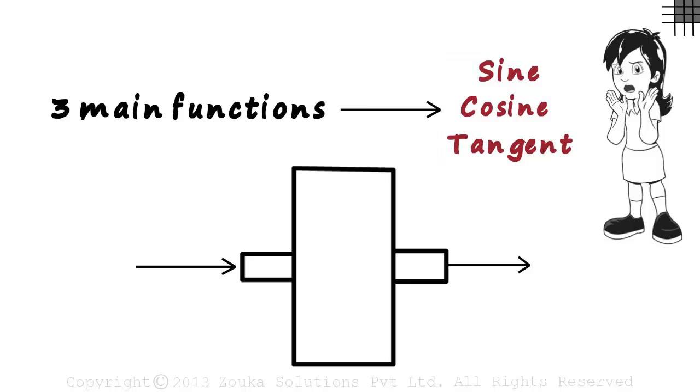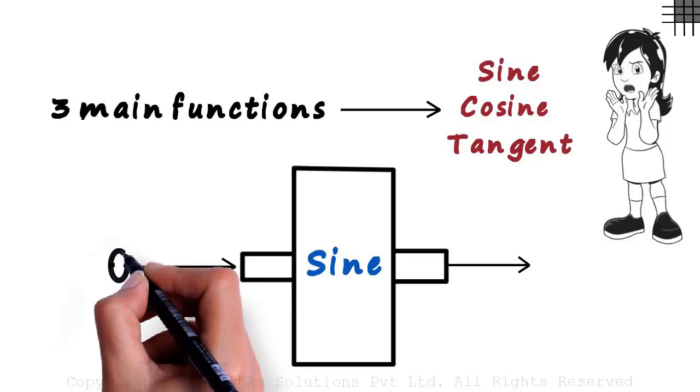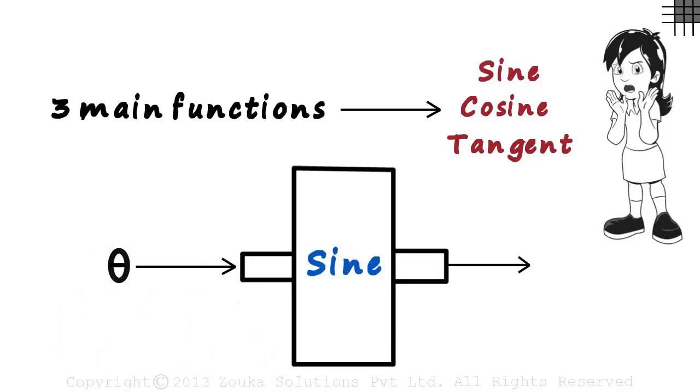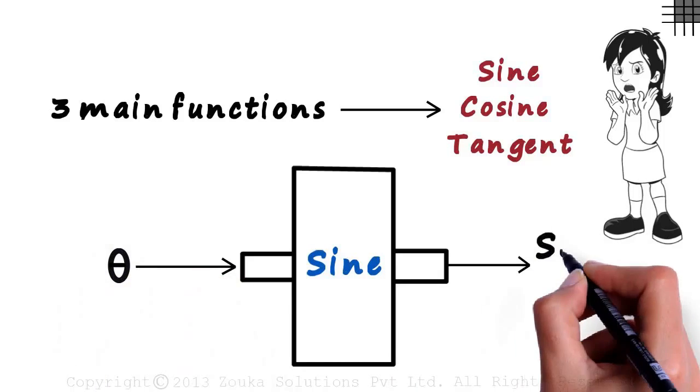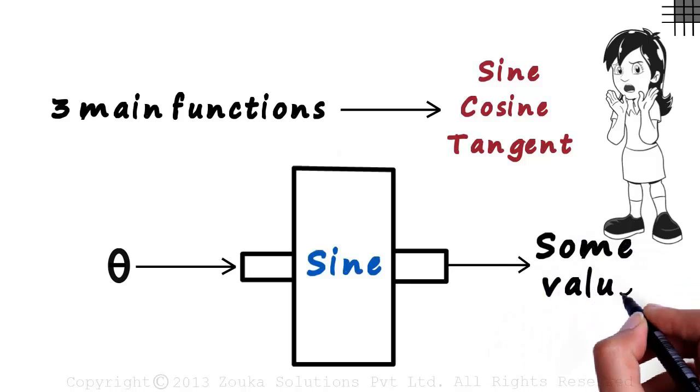Let's assume this is a sine function. Say it takes in a random value theta. It does some operation inside to give us some value. What value? What operation? That depends entirely on the triangle.